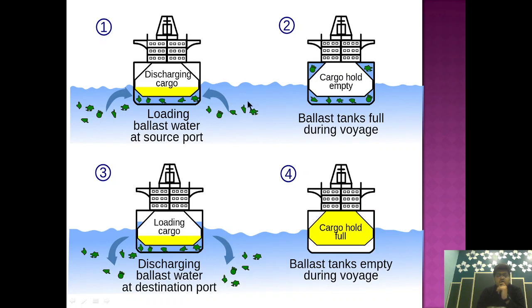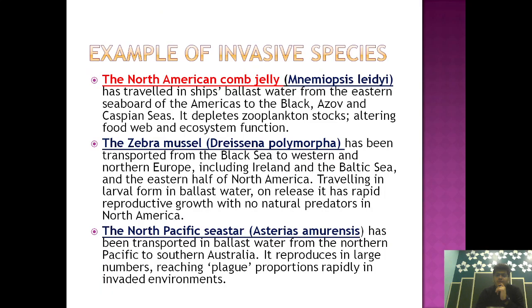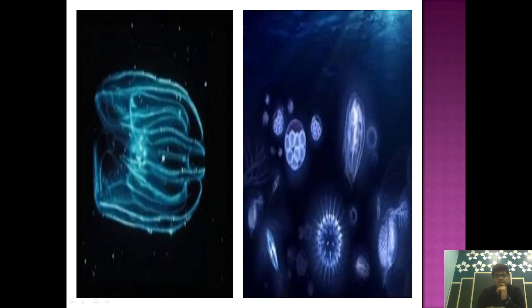The species which is non-invasive in the American marine environment became invasive in the Caspian Sea environment. Basically, the ecological environment varies throughout the world due to varying temperature, and sometimes organisms which are non-invasive in a particular environment become invasive in another host environment. To prevent that, the Ballast Water Convention was needed.